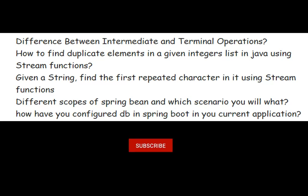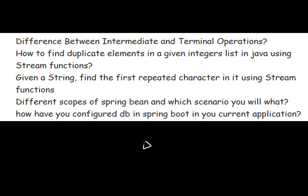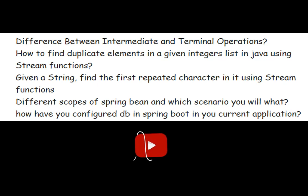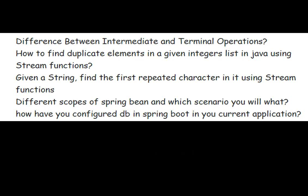Difference between intermediate and terminal operations - again from Java 8 stream features. How to find duplicate elements in a given integers list in Java using stream functions. Given a string, find the first repeated character using stream functions. Different scopes of Spring Bean and in which scenario you will use what: there are different scopes - singleton, prototype, request, session, and global. If you want one per container use singleton; for every request use request scope; for session use session scope.